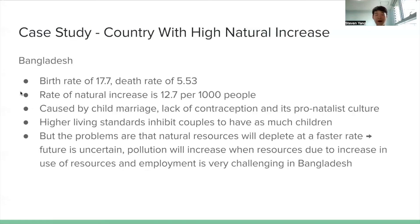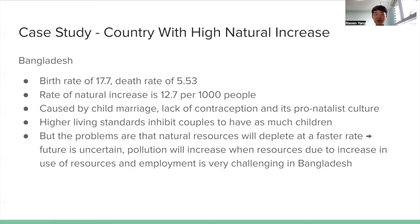The next case study is for a country with a high natural increase. I chose Bangladesh again, since it has a very high birth rate of 17.7 and a death rate of 5.5 per 1,000 people — the difference is very significant. The rate of natural increase is 12.7 per 1,000 people, caused by child marriage, lack of contraception, and a pro-natalist culture. Higher living standards would also inhibit couples from having many children. The problems from a high natural increase are similar to overpopulation: an uncertain future, increased pollution, and high competition for employment.